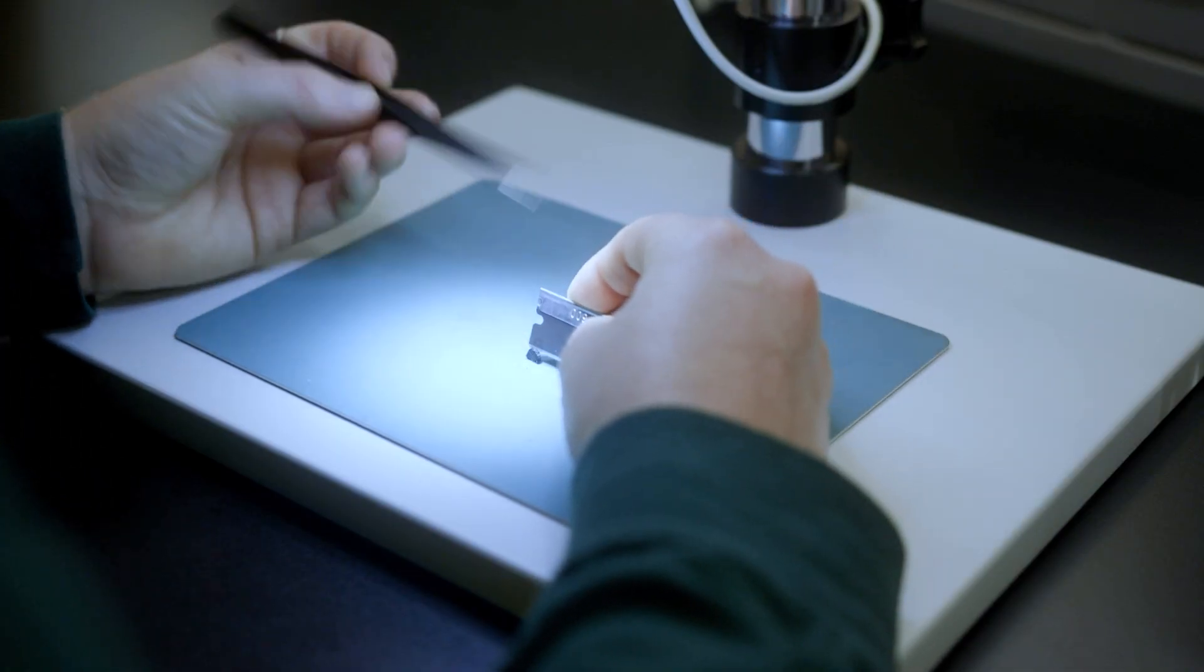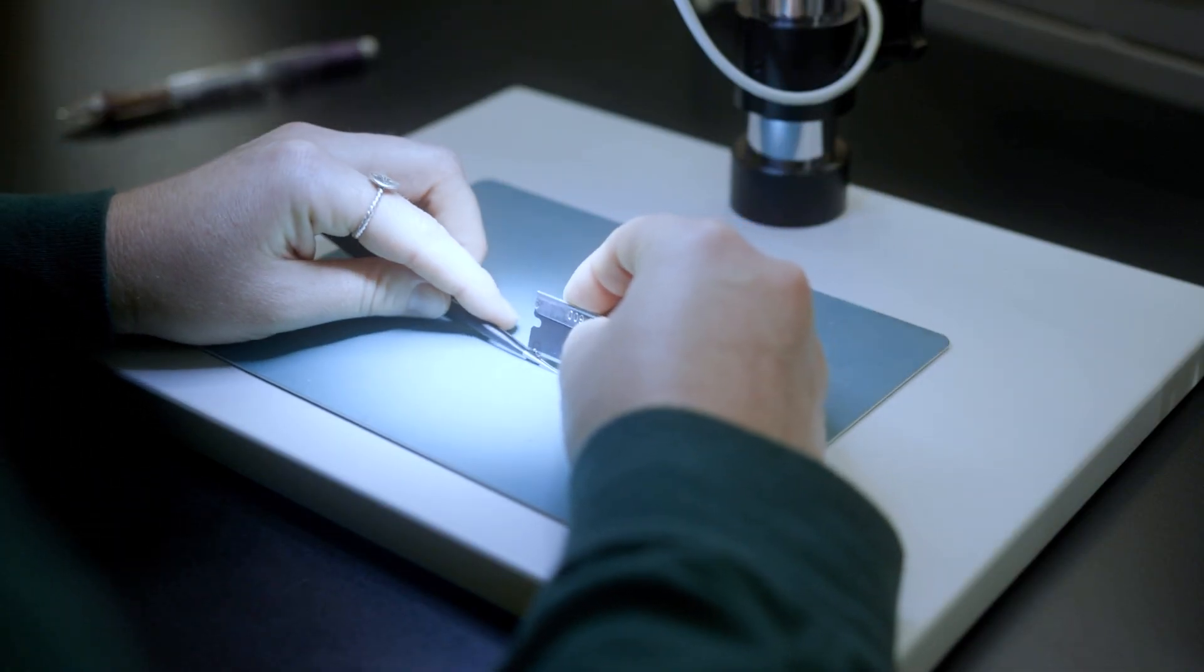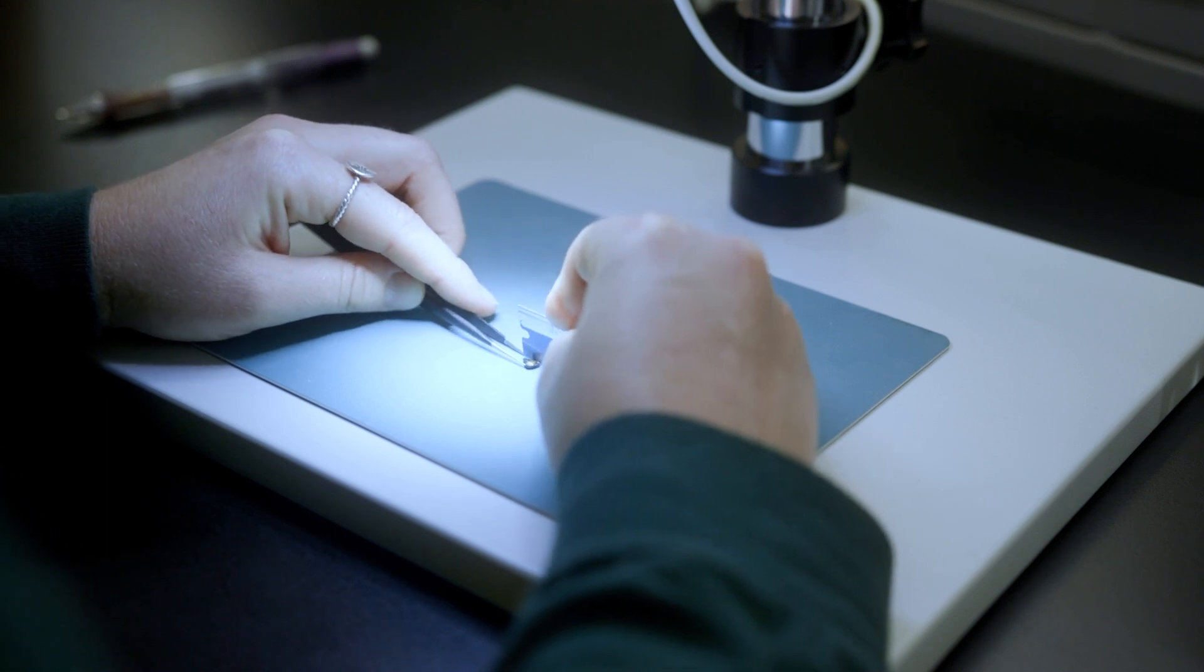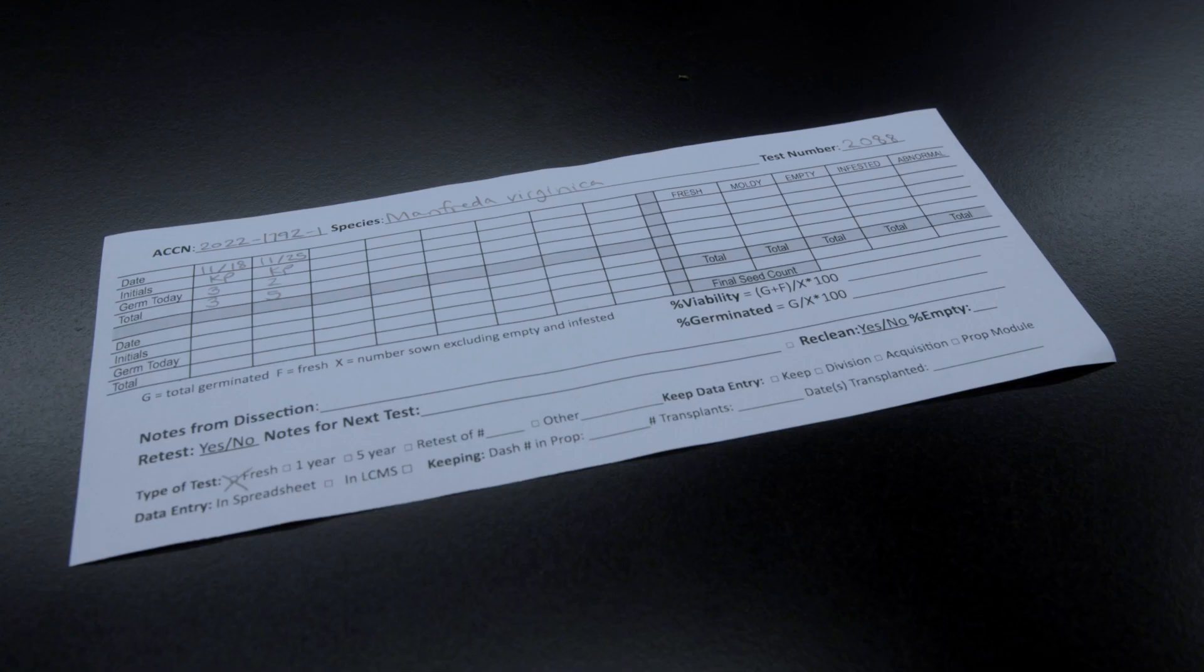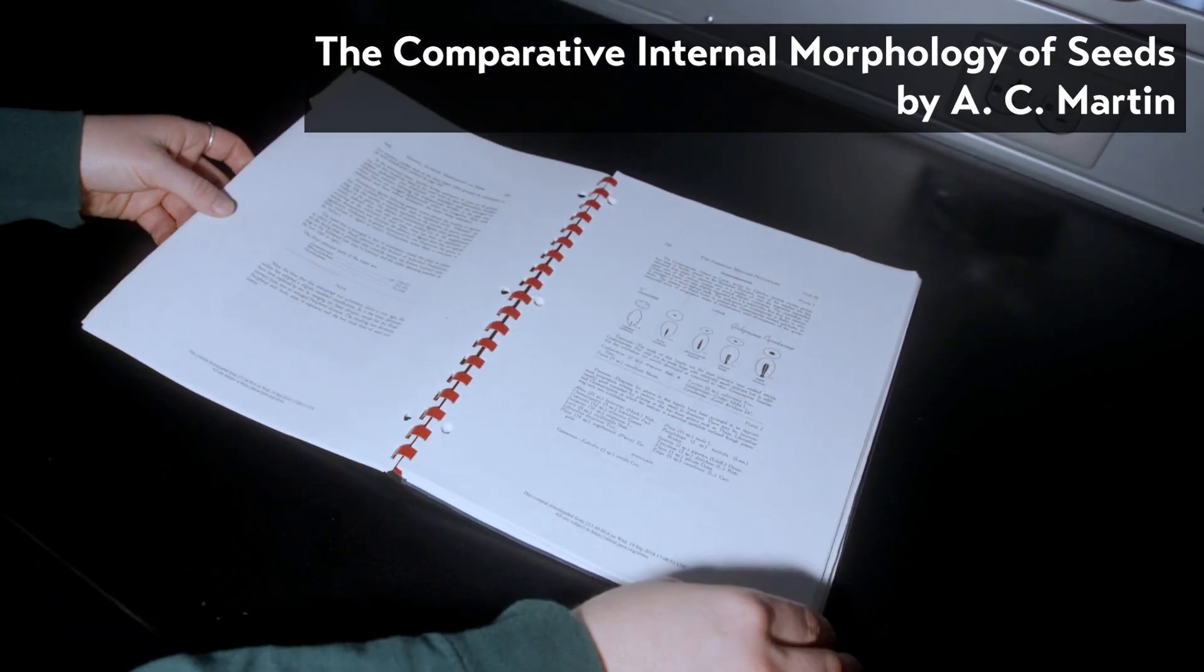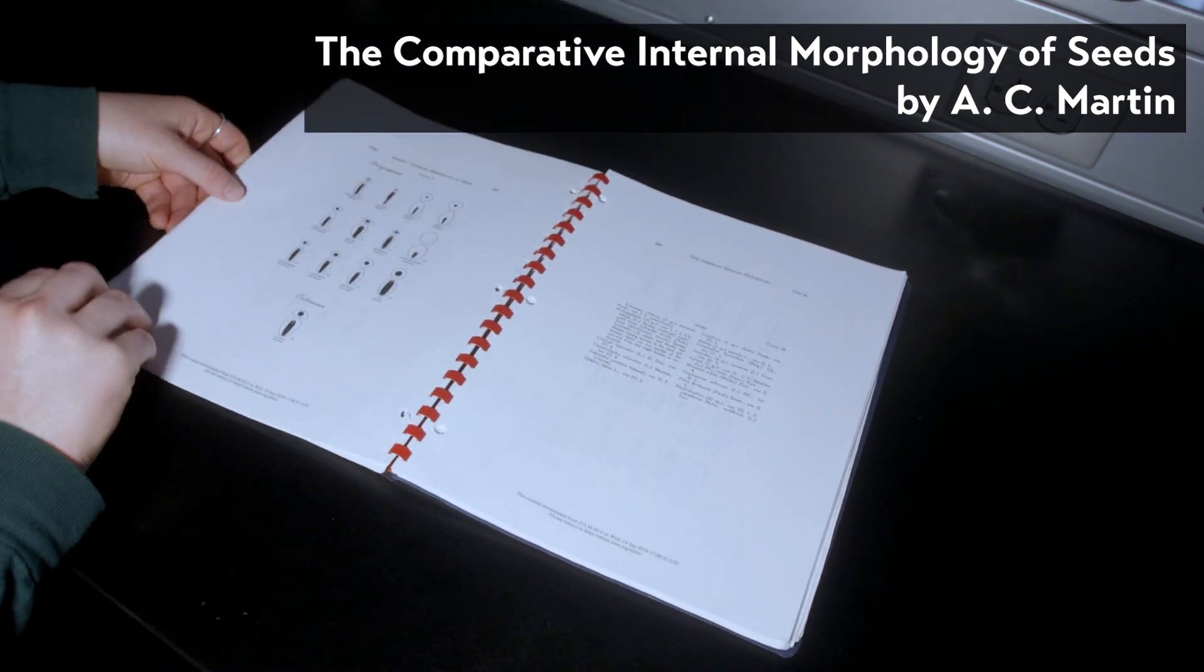At the conclusion of the test, any un-germinated seeds are dissected under a microscope to decide whether the seeds are empty, moldy, or infested, which gets marked on the right side of the score sheet. One useful resource when doing this is the Comparative Internal Morphology of Seeds by AC Martin.